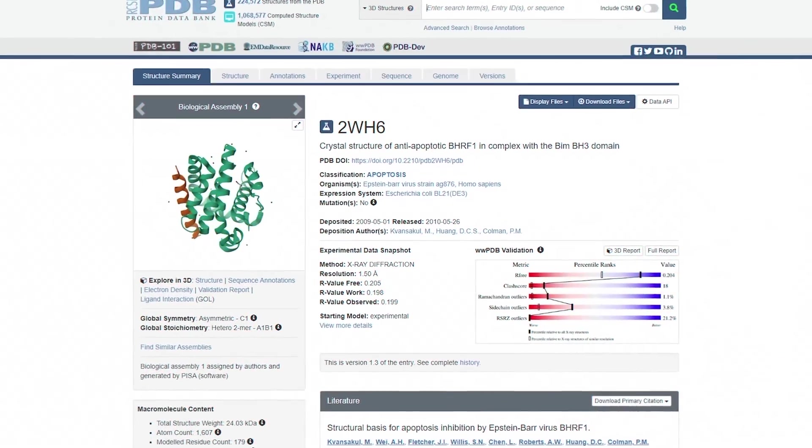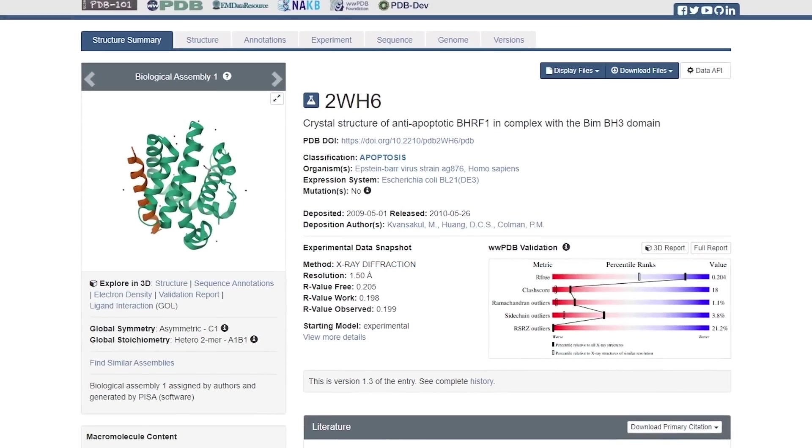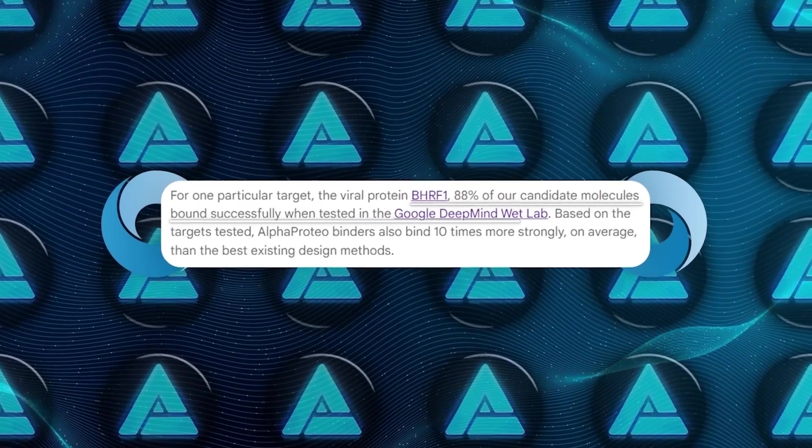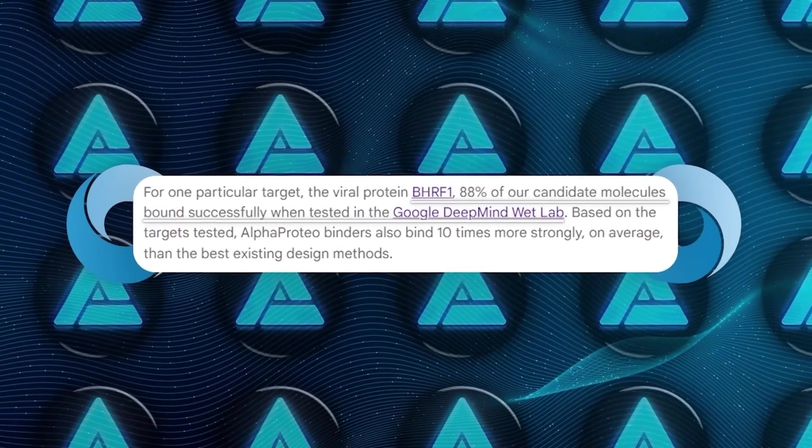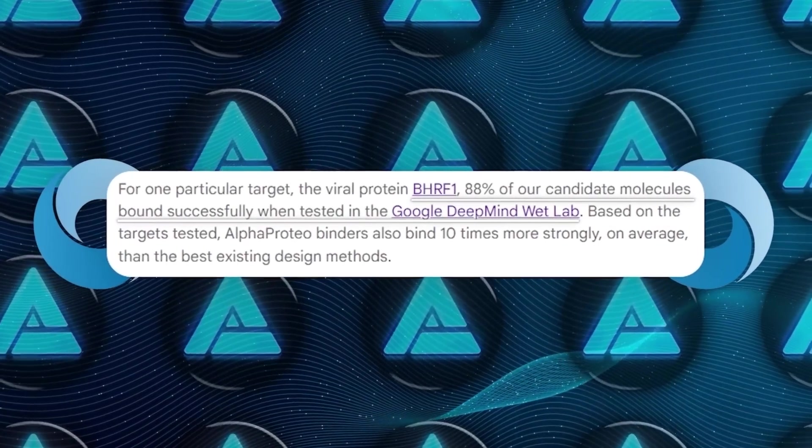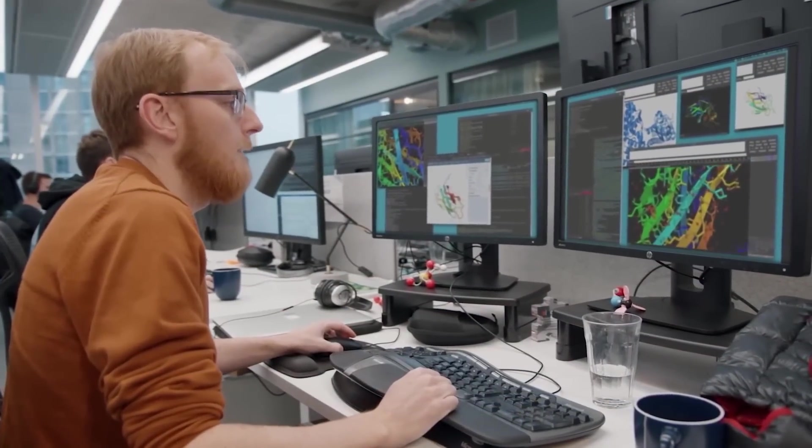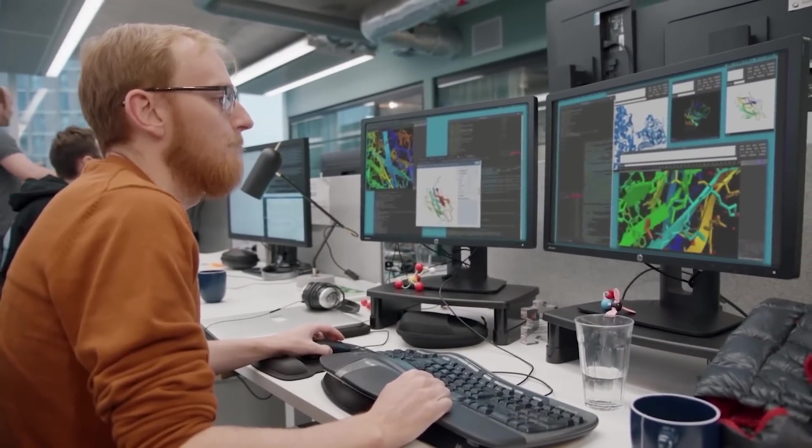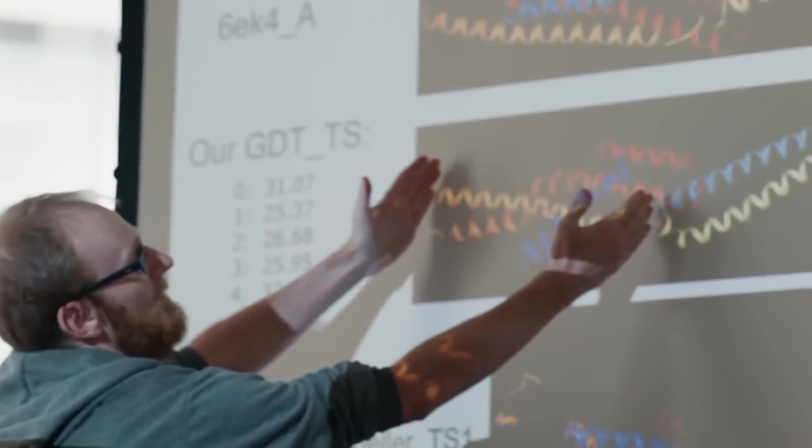Let's take another protein, BHRF1, which is a viral protein. In the lab, 88% of AlphaProteo's candidate binders actually bound to BHRF1 successfully. And get this, AlphaProteo's binders on average are binding 10 times stronger than any of the current best designs.